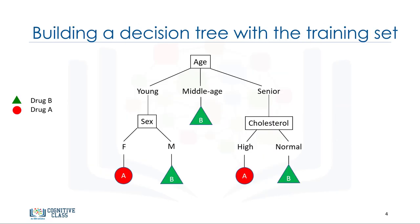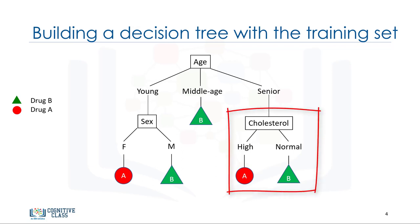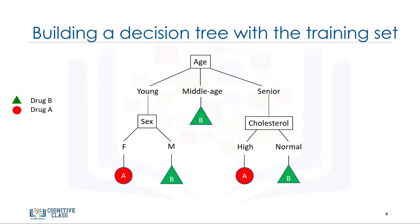Decision trees are built by splitting the training set into distinct nodes, where one node contains all of, or most of, one category of the data. If we look at the diagram here, we can see that it's a patient's classifier.